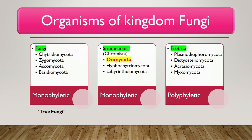Slime molds — Plasmodiophoromycota, Dictyosteliomycota, Acrasiomycota, and Myxomycota — were also called fungi earlier, but are now kept in kingdom Protista. For example, Plasmodiophora brassicae is an important plant pathogen in Plasmodiophoromycota that causes club root disease of crucifers like cabbage and cauliflower. This was treated as a fungus, but is no longer, because of characteristics it shares with other members of kingdom Protista.